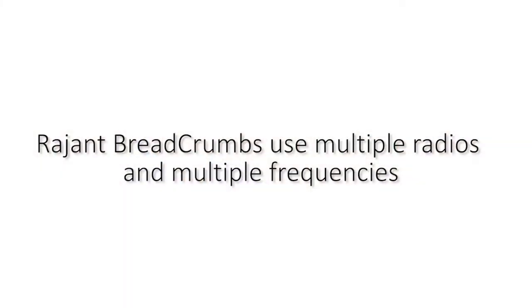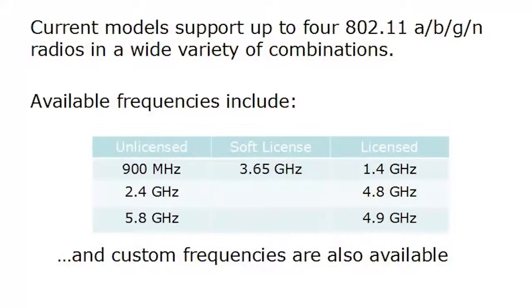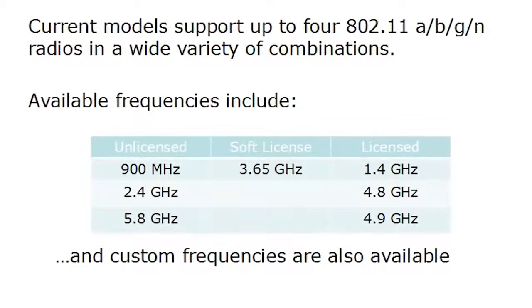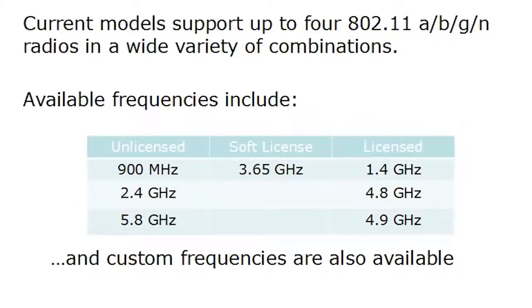Rajant breadcrumbs use multiple radios and multiple frequencies. Our current models support up to four 802.11 A, B, G, or N radios in a wide variety of combinations. And some of our available frequencies include 900 megahertz, 2.4 gigahertz, 5.8 gigahertz.